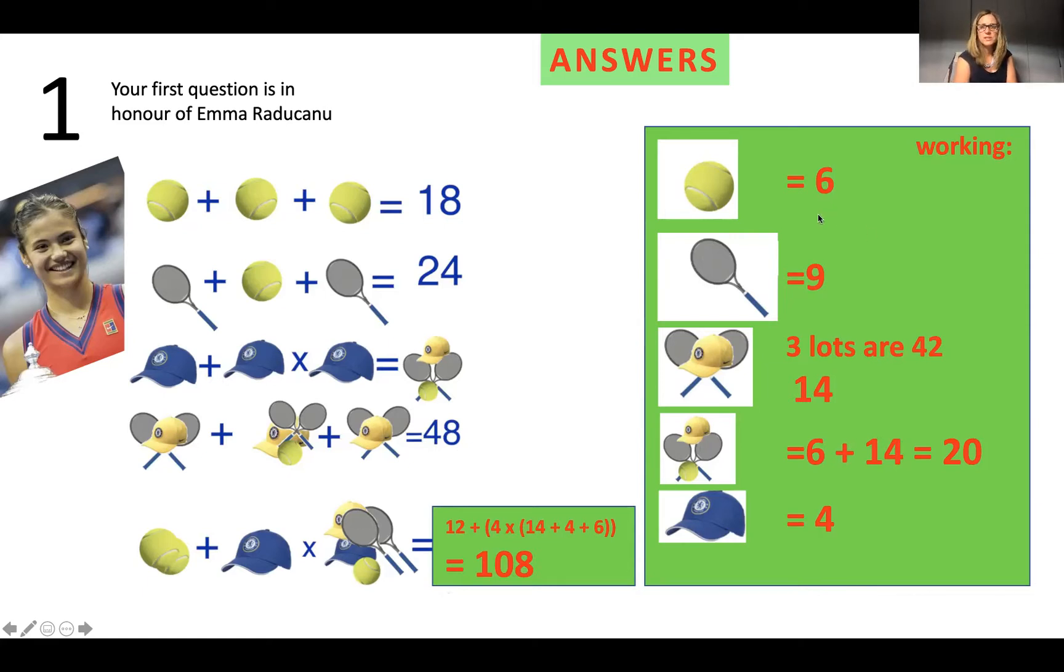the first one is six, because I've got three tennis balls of 18, therefore one is six. Now I know that this tennis ball here on the second row is six, I can subtract the six from 24 to give me 18. 18 divided by two gives me nine. So my tennis racket is nine. Now let's look at the next one.